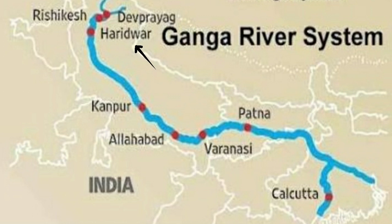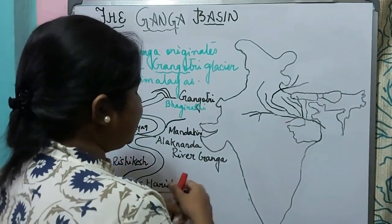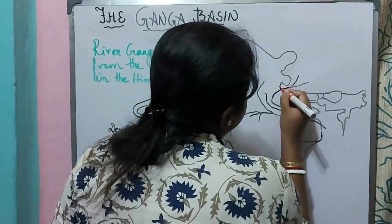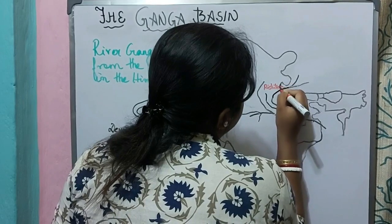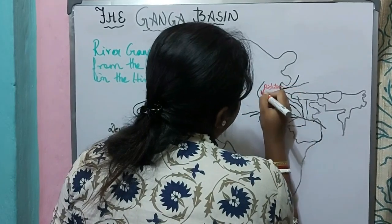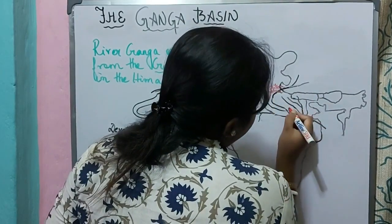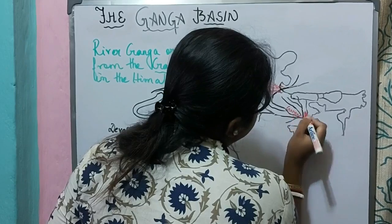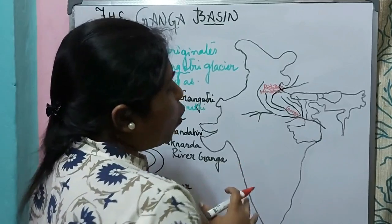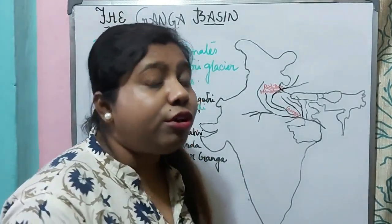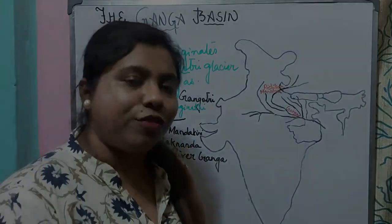At Haridwar, the river Ganga reaches and enters the northern plains. After reaching the plains, the river Ganga flows very slowly. Here, the river Ganga is joined by some tributaries. Let us now learn about the tributaries of river Ganga.